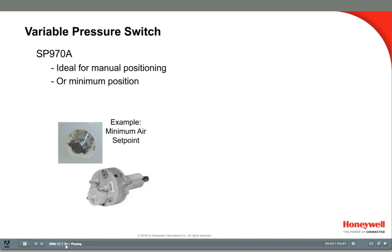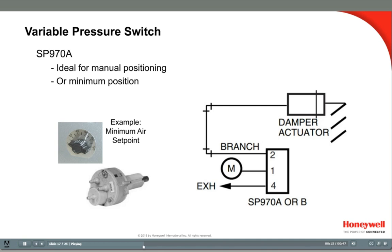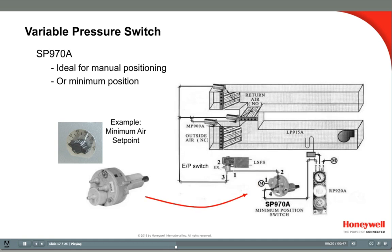The SB970A sends a certain pressure to a damper actuator to hold a minimum position. When the signal from the controller rises above that pressure, it will pass the pressure on to the damper. It is piped to the controller on port 4, to main air supply on port 1, and to the damper on port 2. The SB970 will hold the damper at a minimum position as set on the switch. As the controller's branch signal rises above this setting, the switch will pass the controller's branch pressure to the damper so the damper will open and modulate normally. When the controller's branch signal falls below that setting, it will go back to keeping the damper at a minimum position for fresh air.